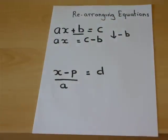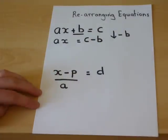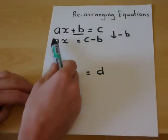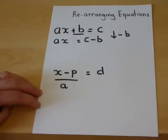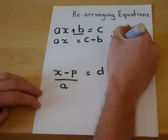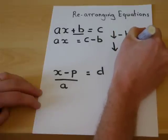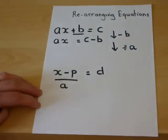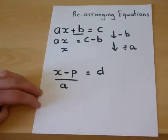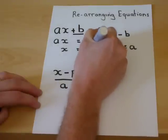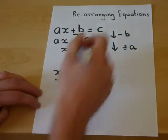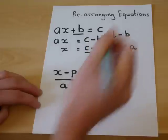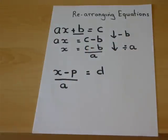We cannot work out what c take away b is, but we can leave it in an algebraic form. We are then left with an a times by an x, which has an inverse of divide. So I divide by a, to leave x equal to c take away b, but this has been divided by a. And that is an equation in terms of x, and has been successfully rearranged.